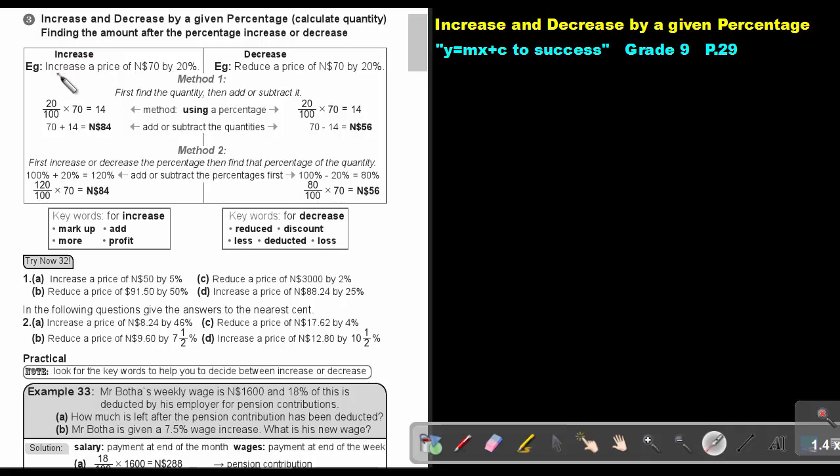Increase a price of 70 Namibian Dollars by 20%. Now let's first look at Method 1. First find the quantity, then add or subtract. So first work out 20% of 70. So it's 20 over 100 times 70 and that will give me $14. So then I will just take the 70, I will add the 14 and I will get 84 Namibian Dollars.